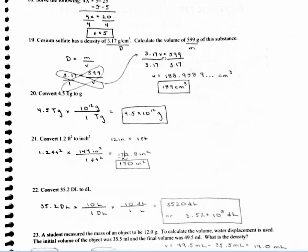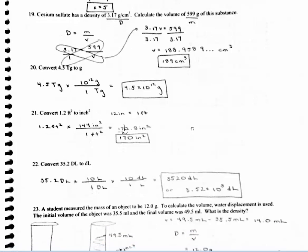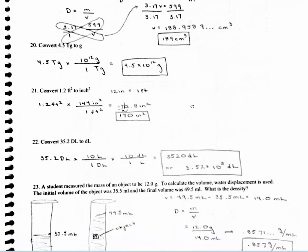Then figure out significant figures. Since you're multiplying and dividing, you base it off of sig figs. 3.17 has 3 significant figures; 599 has 3, so your final answer needs 3. You can draw a line here: since 9 is the number directly to the right of 188, the 9 will round the 8 up. So I looked at significant figures and also units.